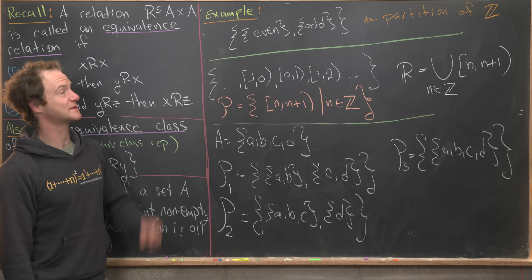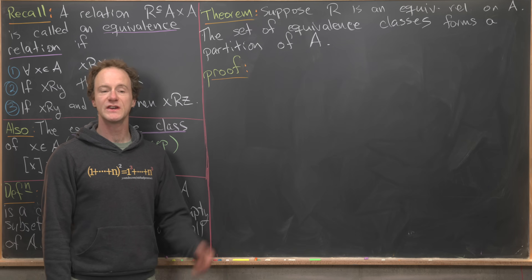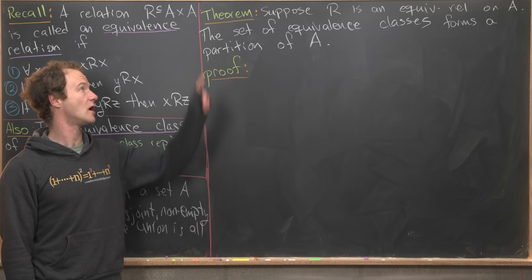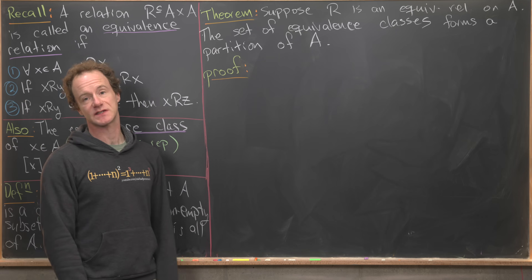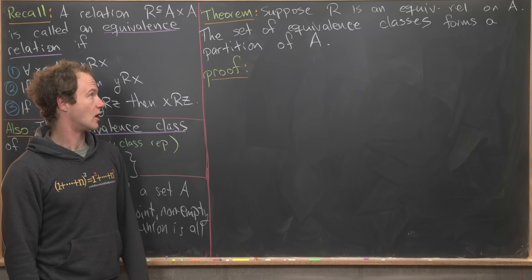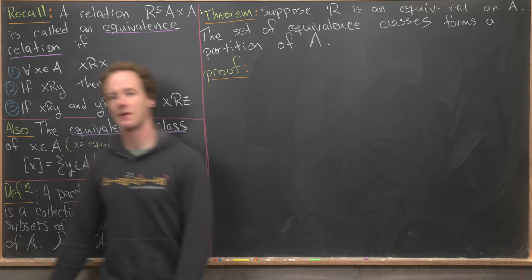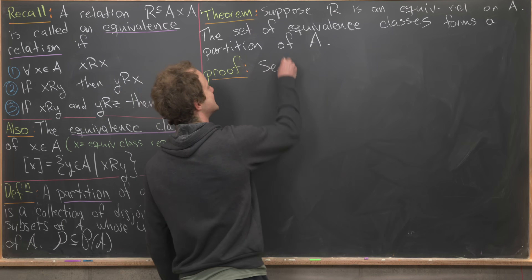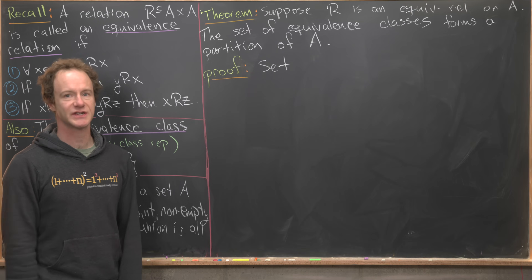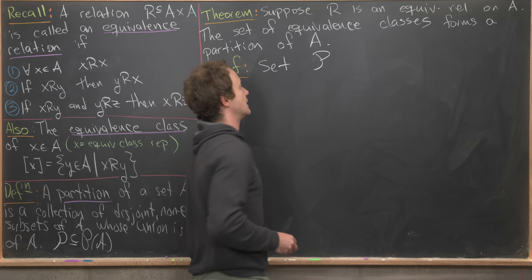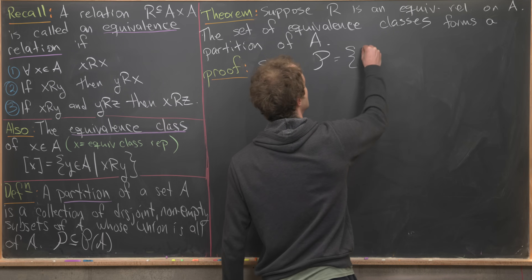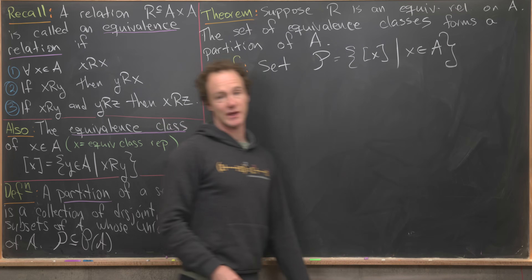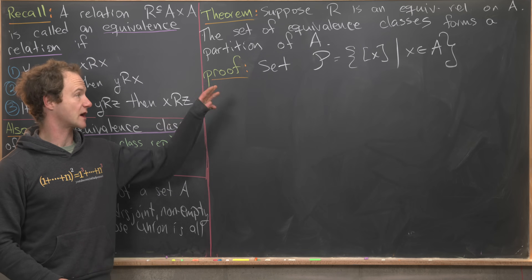We're going to prove a classic result that links partitions with equivalence relations: if we have an equivalence relation R on a set A, then the set of equivalence classes under R forms a partition of A. Let's define P to be the set of all equivalence classes of elements as we run through all elements inside A. There are three things to check: all sets in P are non-empty, they are disjoint, and their union is all of A.